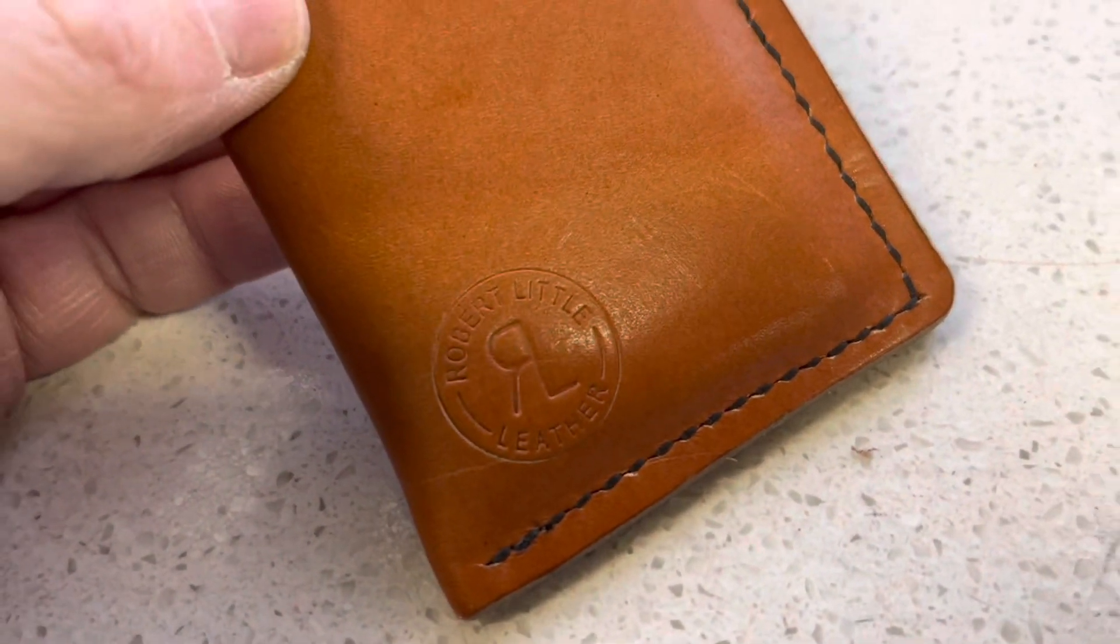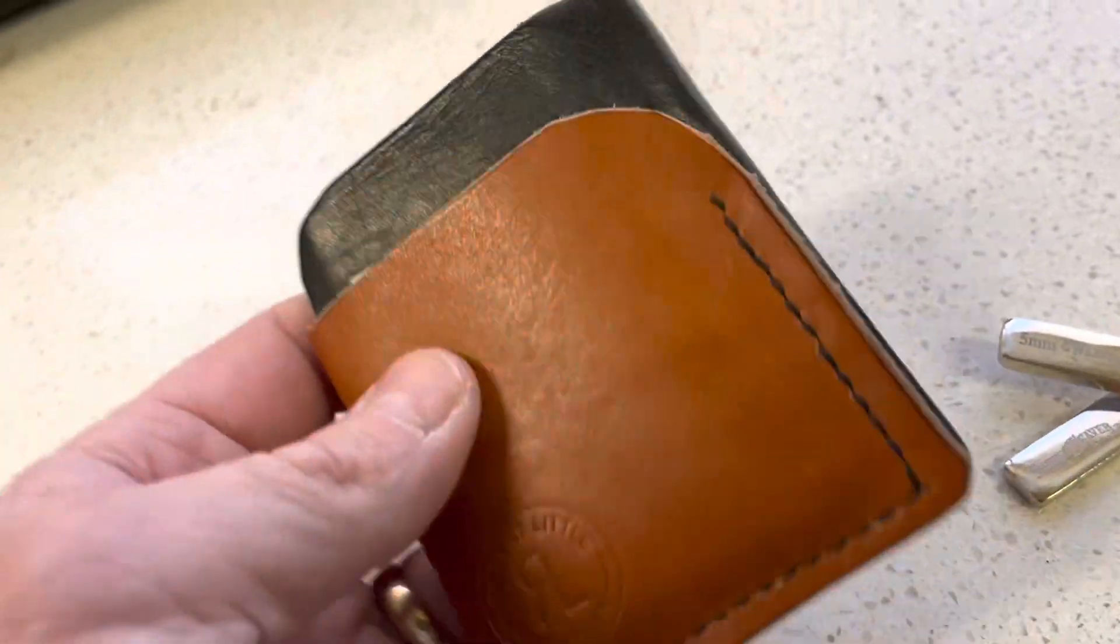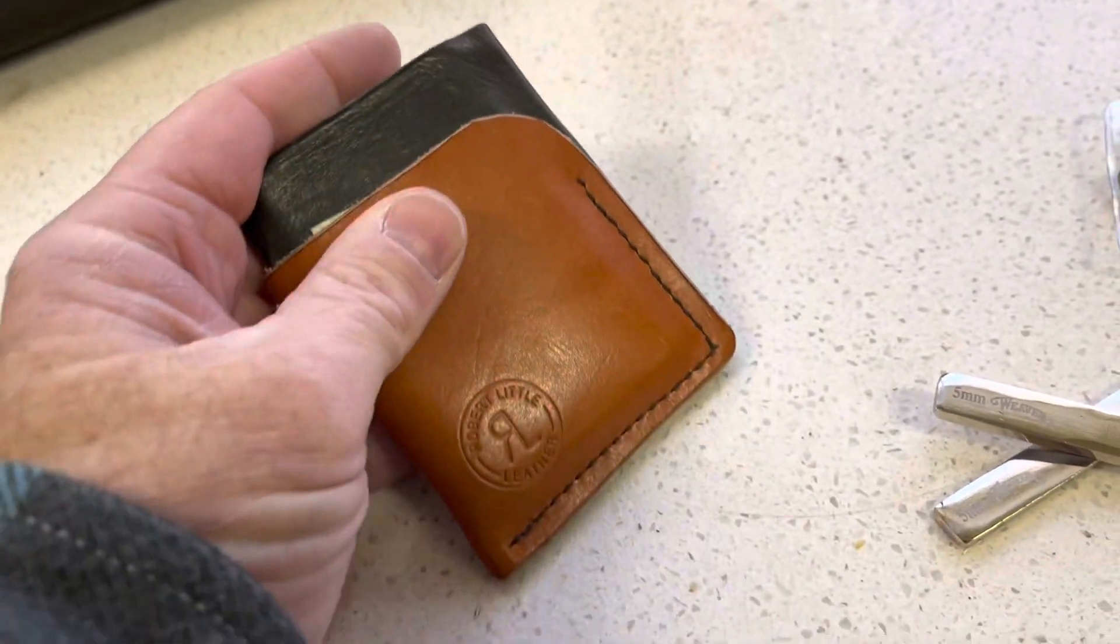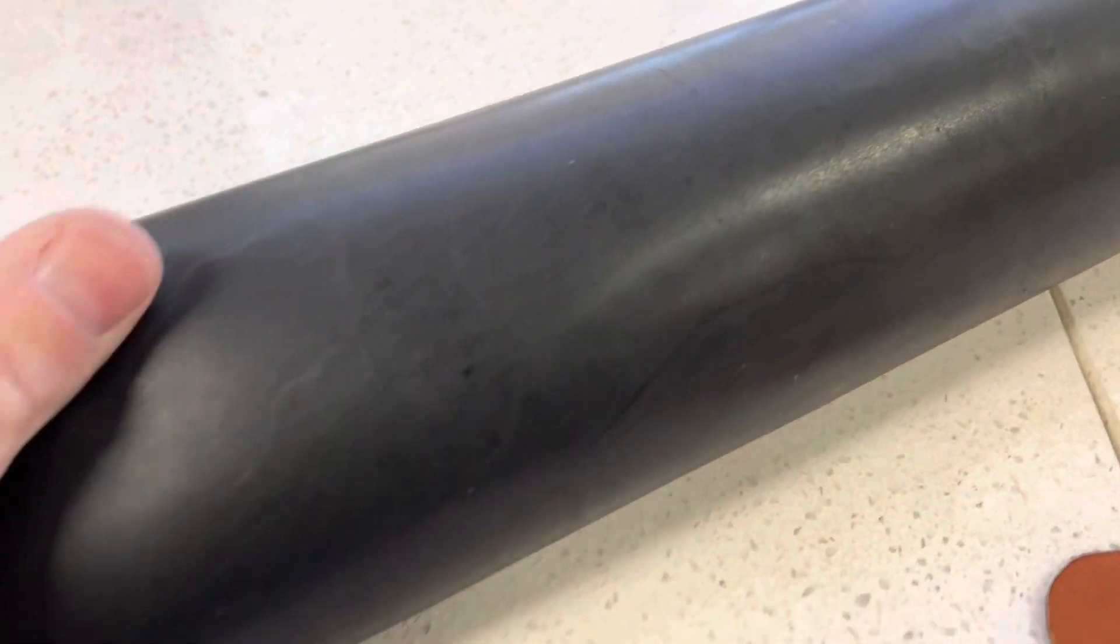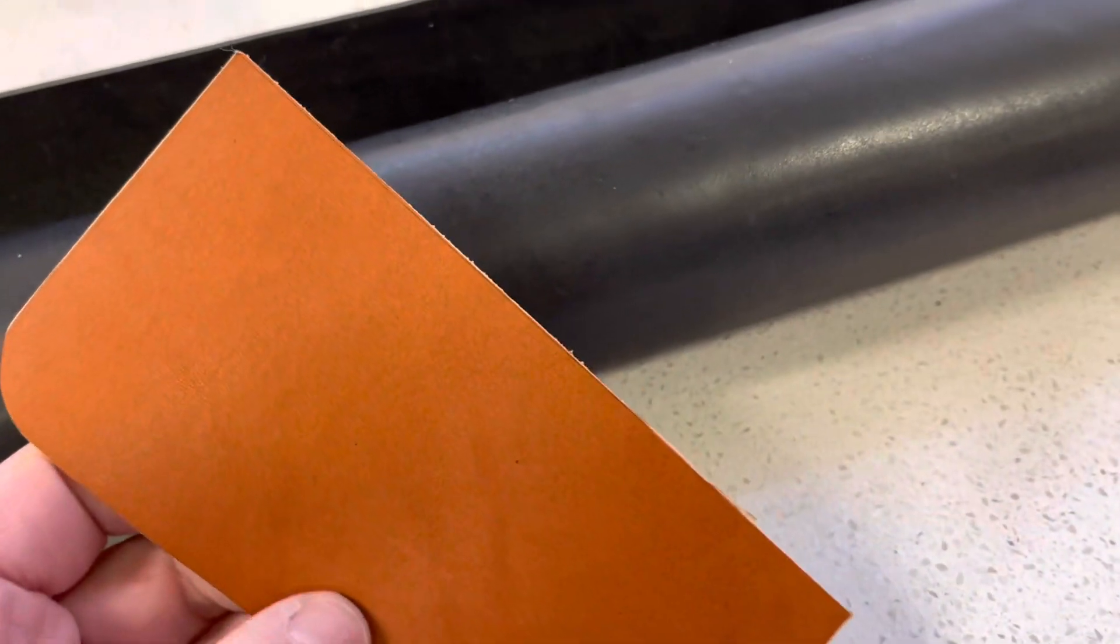Today on this segment of what's on my workbench, I'm going to be making this wallet here. To make this wallet, I've purchased two pieces of leather from Weaver Leather - it's San Paulo leather. I've purchased a double shoulder of black and a double shoulder of this apricot as well.